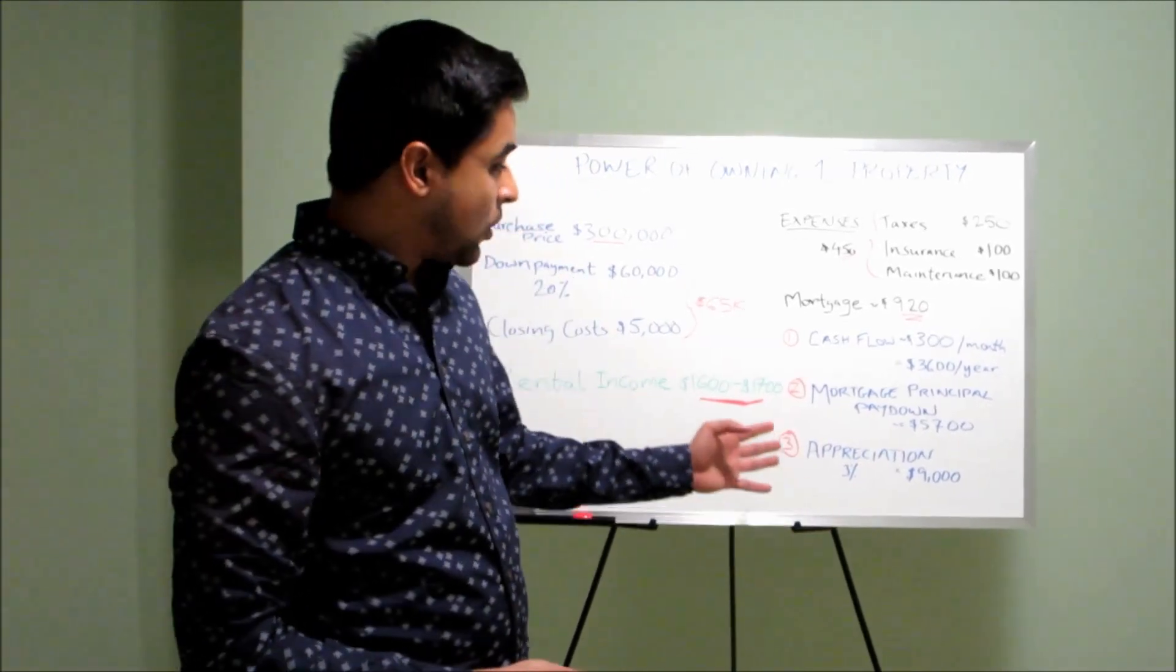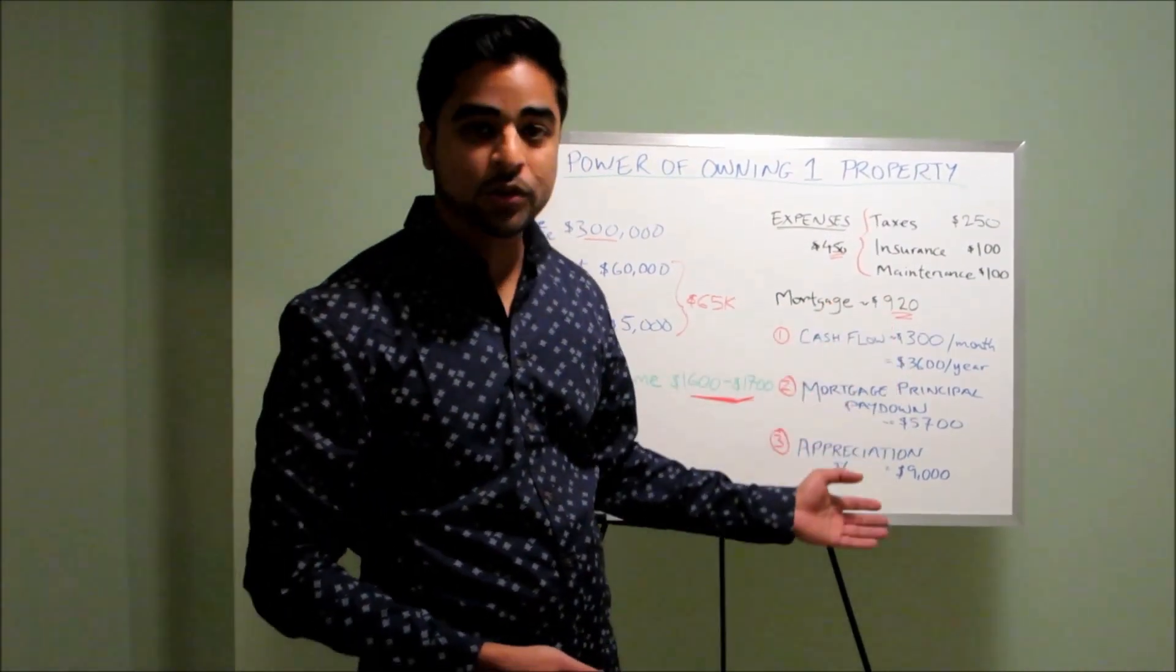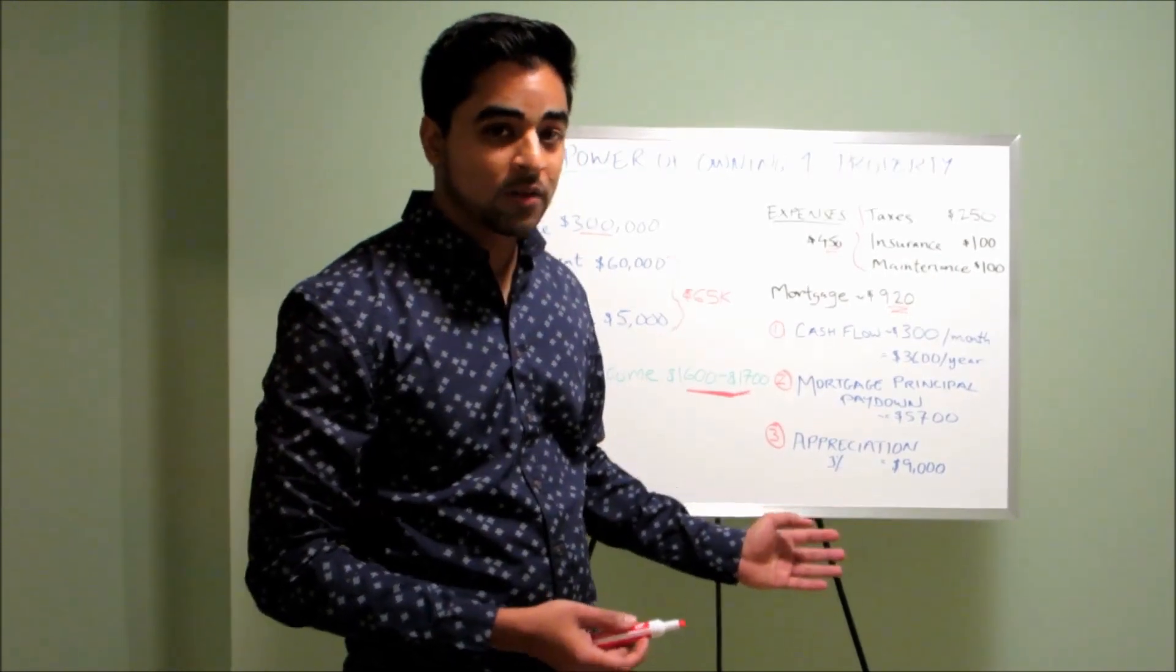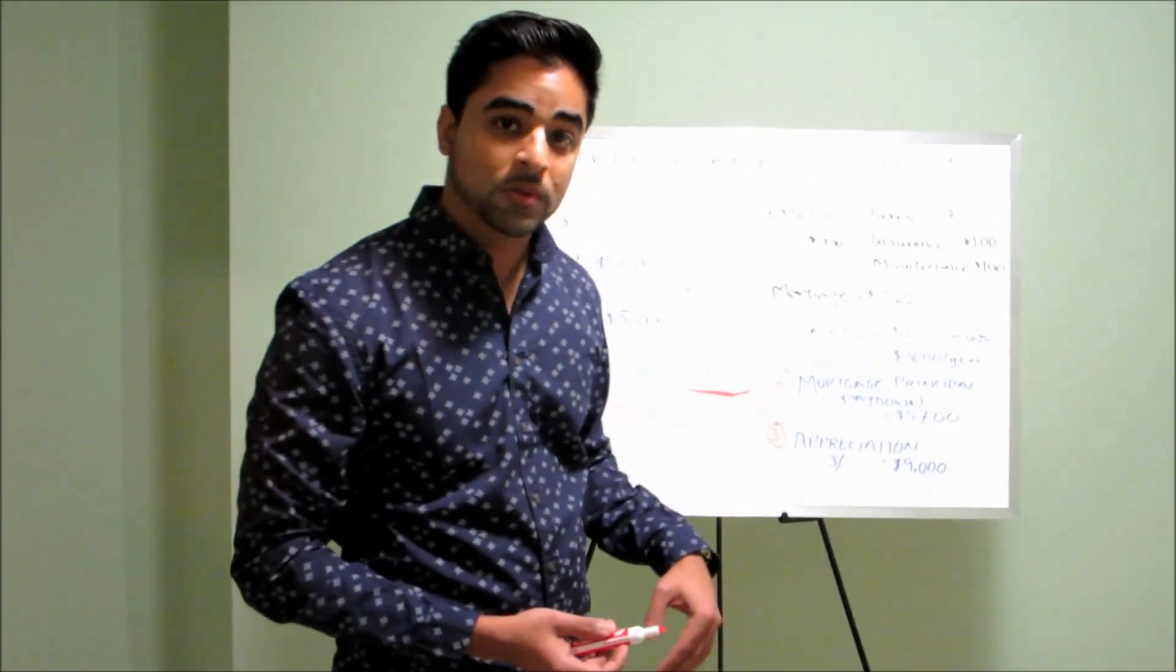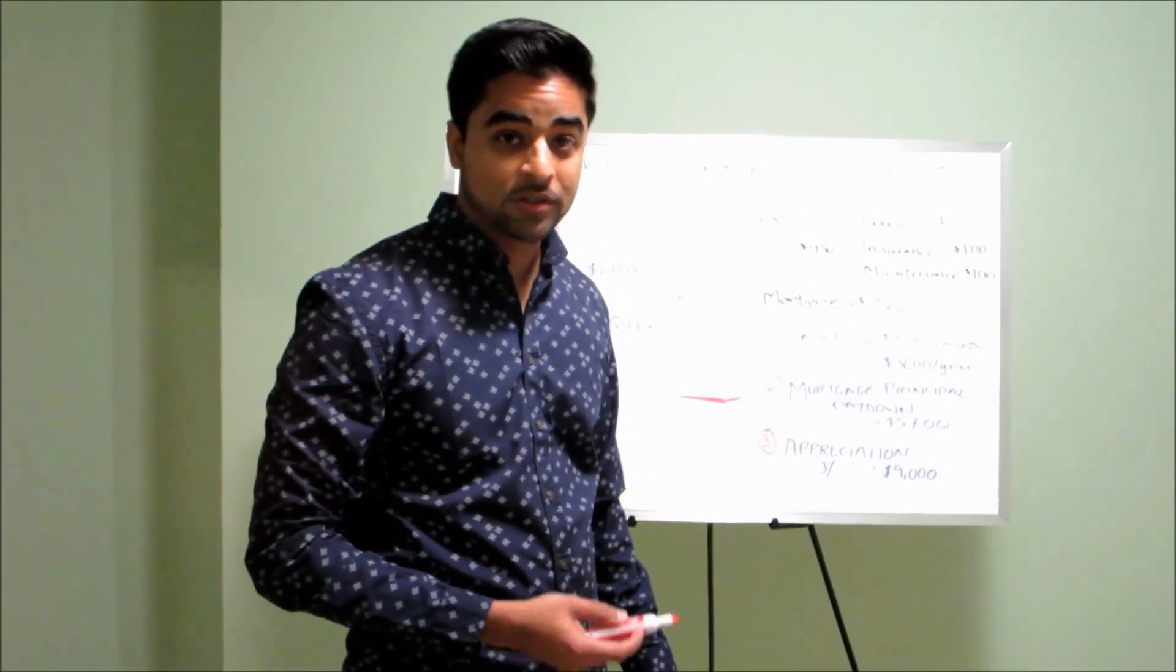So all in all, if you just calculate $9,000 plus $5,700, plus $3,600, you're getting approximately almost $20,000 on your $65,000 investment. So those are pretty really good returns from my perspective.